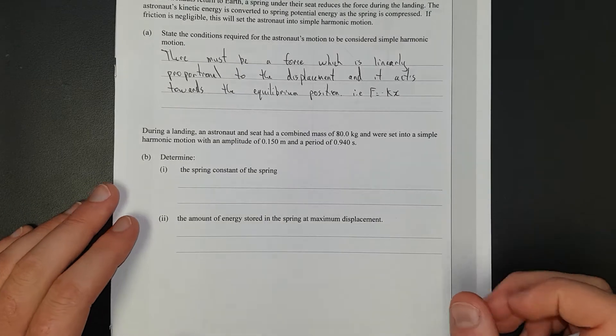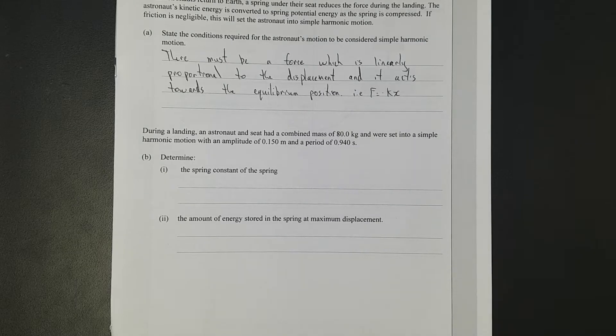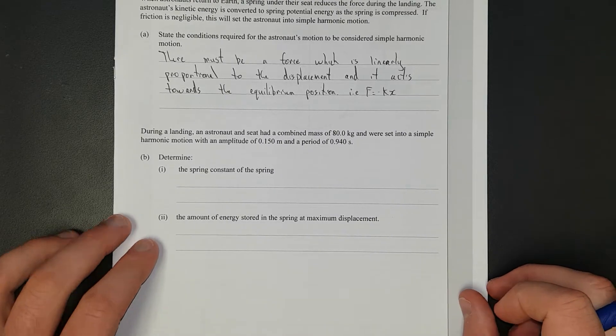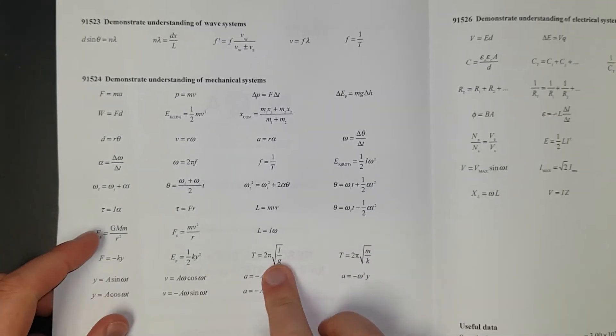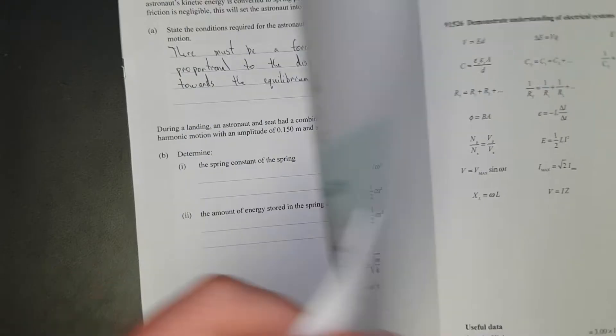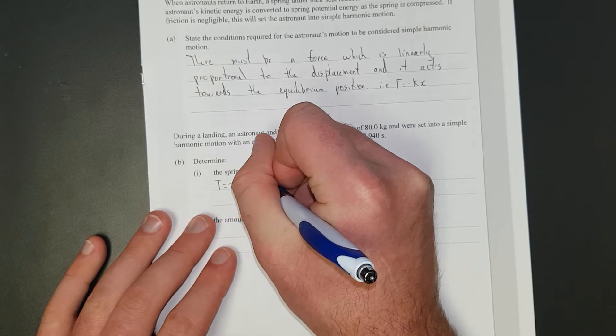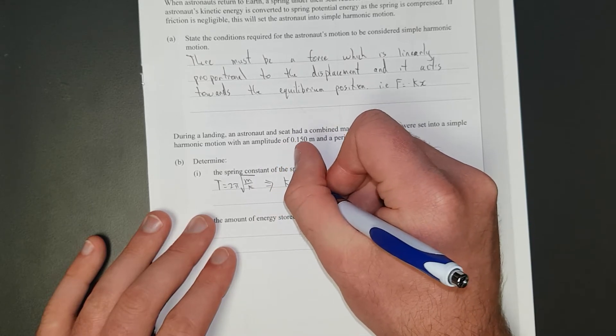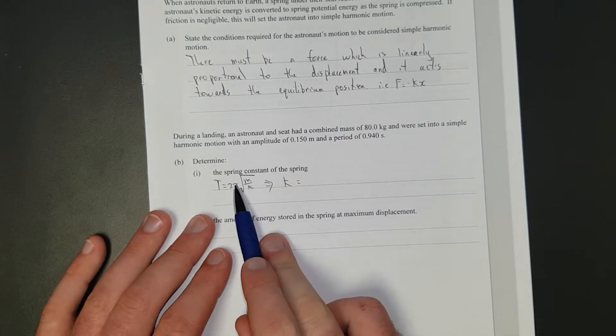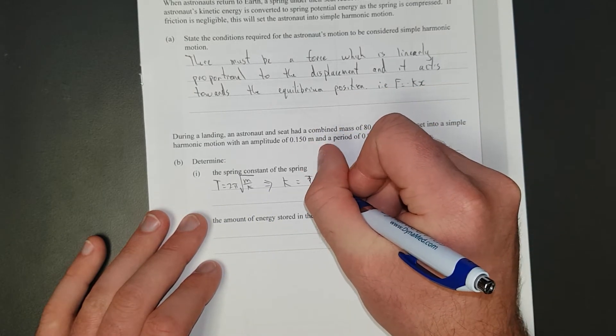During landing the astronaut and seat had a combined mass of 80 kilograms and were executing simple harmonic motion with an amplitude of 15 centimeters and a period of 0.94 seconds. Determine the spring constant of the spring. The formula on your formula sheet is T equals 2 pi square root M over K, and we'll rearrange it for K.